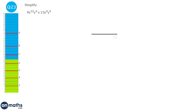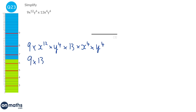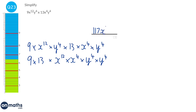Writing out all the multiplication signs: 9 times 13 times x to the power of 12 times x to the power of 4 times y to the power of 4 times y to the power of 4. Reordering, 9 times 13 is 117. When multiplying powers with the same base we add the exponents: x to the 12 times x to the 4 is x to the 16. And y to the 4 times y to the 4 is y to the 8. Answer: 117x¹⁶y⁸.